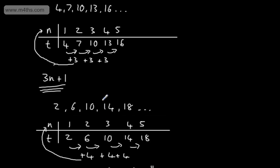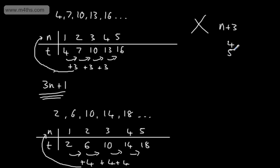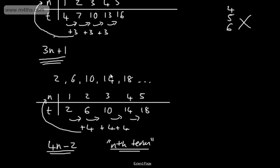We wouldn't write that this is n plus 3, because if we take n to be 1 that gives us 4, but if n is 2 and we add 3 that gives us 5, and if n is 3 that gives 6 — and this is not the sequence. So we've got 3n plus 1.